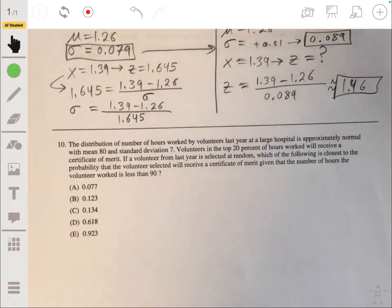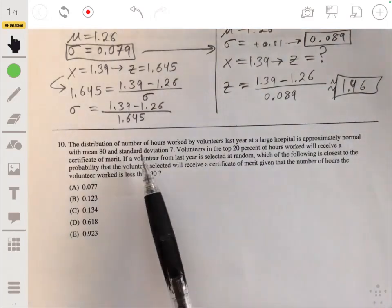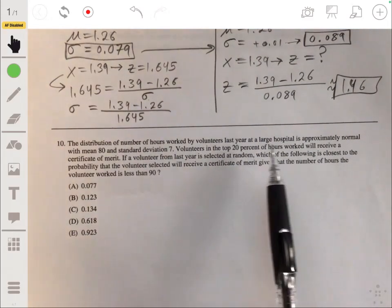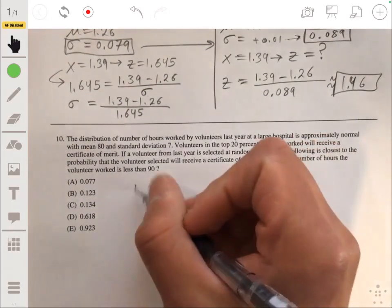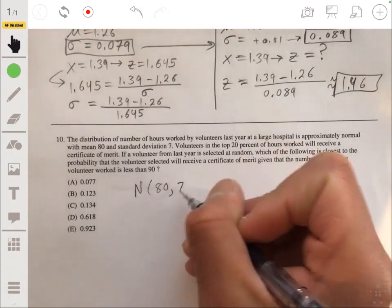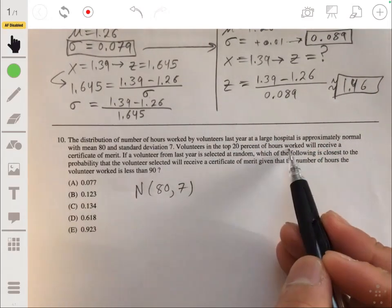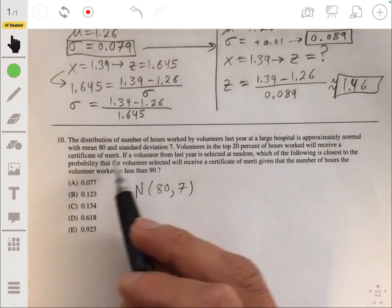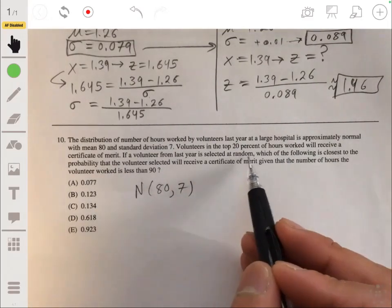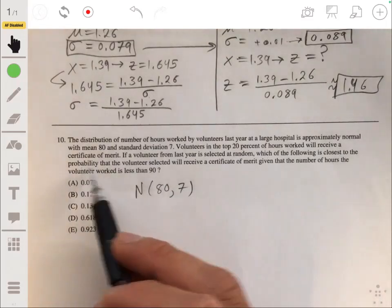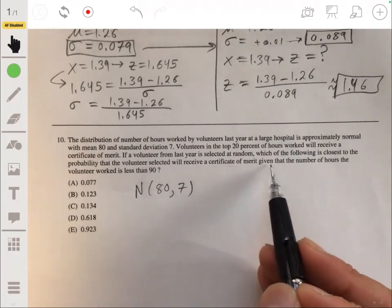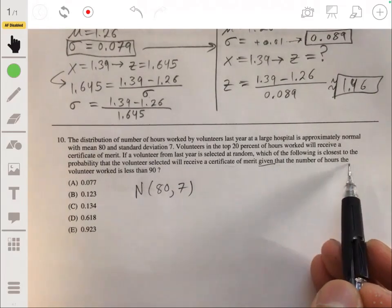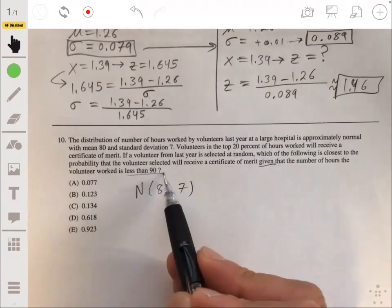Okay, so we're told that the distribution of the number of hours worked by volunteers last year at a large hospital is approximately normal with mean 80 and standard deviation 7. Volunteers in the top 20% of hours worked will receive a certificate of merit. A volunteer from last year is selected at random, which of the following is closest to the probability that the volunteer selected will receive a certificate of merit given that the number of hours that volunteer worked is less than 90.